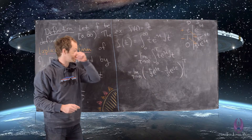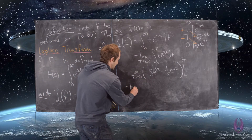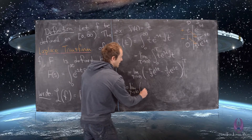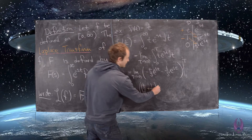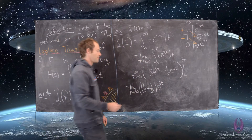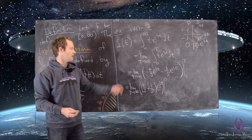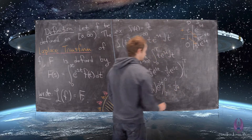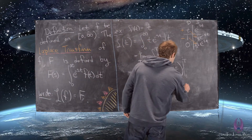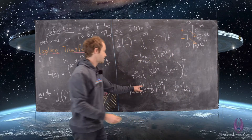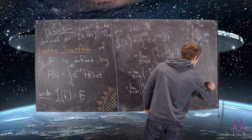Flipping the bounds and switching the sign, we get the limit as capital T goes to infinity of the quantity t over s plus one over s squared, all times e to the minus st, evaluated from T to zero. Evaluating at zero gives one over s squared, and evaluating at T gives the limit as T goes to infinity of capital T over s plus one over s squared times e to the minus sT.